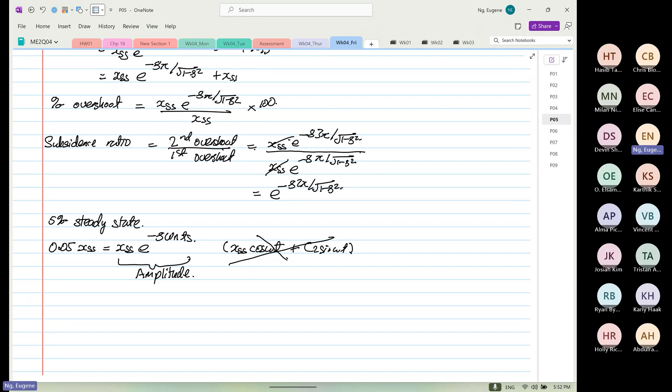So for this case, the math is really easy. You can cancel x_ss. Natural log on one side, 0.05. And then on the other side, you have minus zeta omega_n t_s. Now, don't worry about the minus sign because when you natural log a number less than one, it's equal to minus 2.996. It's equal to minus zeta omega_n t_s.